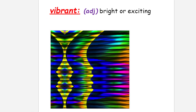And another vocabulary word — look at those colors! Is that vibrant or what? 'Vibrant' means bright or exciting. That is really cool; look at the layers there — it's doing a number on my eyes.